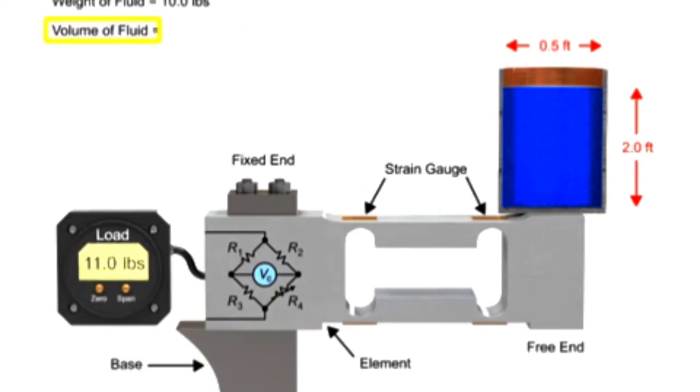The volume of the fluid is then derived by dividing the fluid weight by the density of the fluid. The level of the fluid is finally calculated by dividing the volume of the fluid by the surface area.